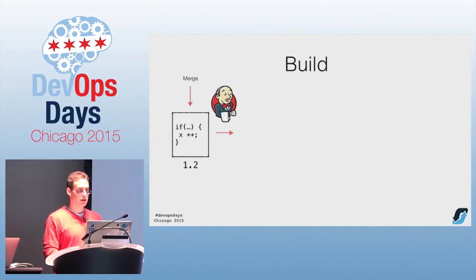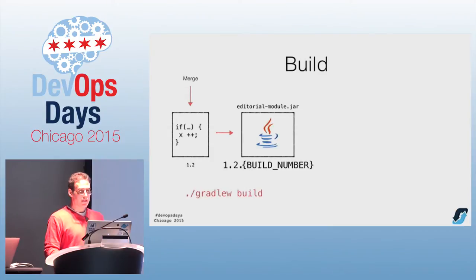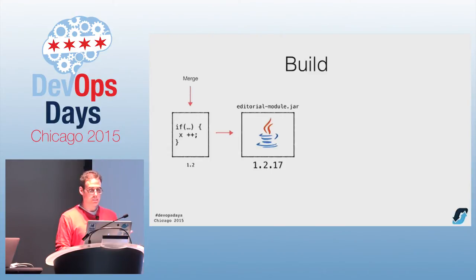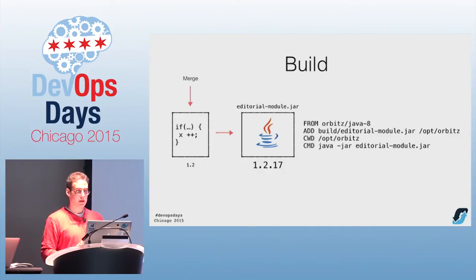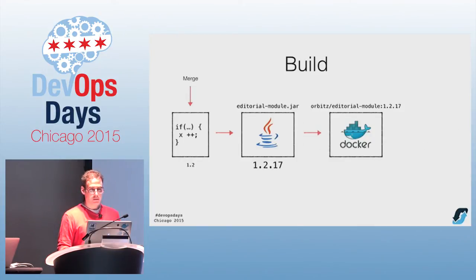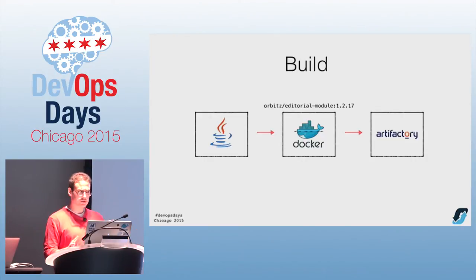The build step looks like this: the code internally contains a version property file — major/minor versioning, so in this case something like 1.2. Because every build is a potential release candidate, you need to tag and version everything. The concept of a 'beta' is just gone — everything's a release. We use the Jenkins build number for the build tag. We package the thing up in a Docker container. This is a simple Spring Boot app, which is why it's just 'java -jar.' We push it to our Artifactory instance, which is our Maven repository — for most people this would be Docker Hub or a private Docker registry.